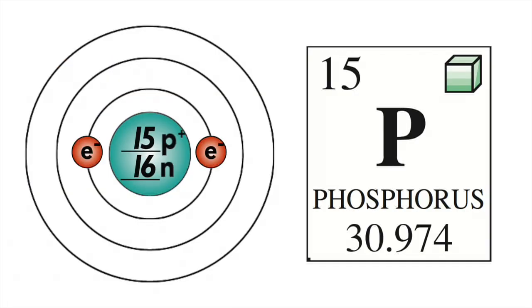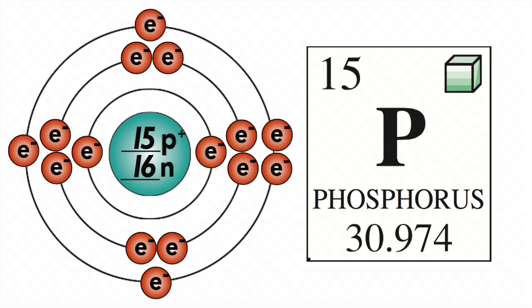Phosphorus has two protons on the first energy level, eight in the second, and five in the third. Again, there's no rule about which ones get paired up.